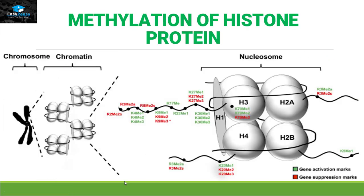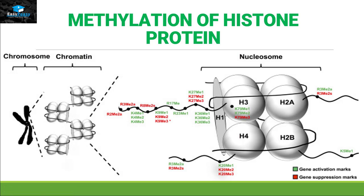Methylation of histone protein: histone proteins are present inside chromosomes as nucleosomes, in which 8 histone proteins are surrounded by DNA. These histones play a major role in transcription. The histone tails are modified with methyl groups, and when methyl groups are attached to the green positions they activate the gene for transcription. If methylation occurs on the red positions of lysine, it halts transcription. So the major function of histone methylation is to act as a regulator of transcription.